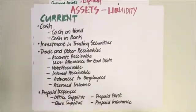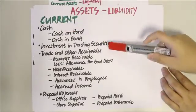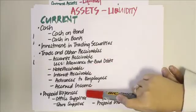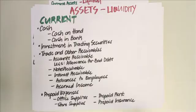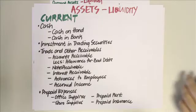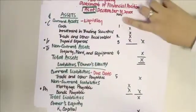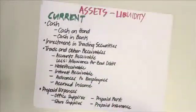Under assets, current assets are always arranged according to liquidity in a specified order on the statement of financial position: starting with cash, then investments in trading securities, then trade and other receivables, then prepaid expenses. Under cash, you may have cash on hand or cash in bank — these two components are not presented on the face of the financial statement but rather in the notes.